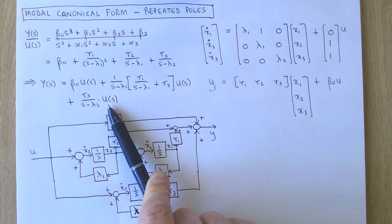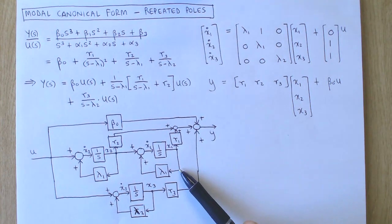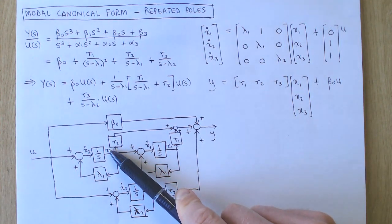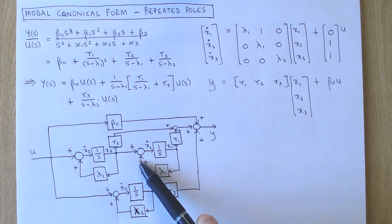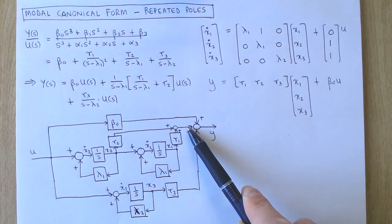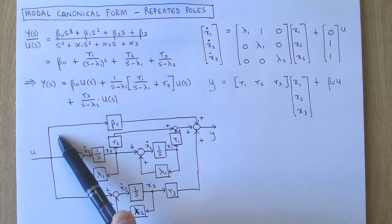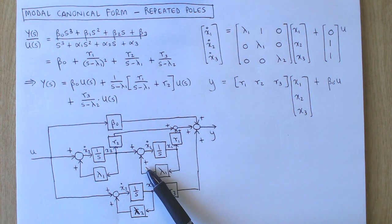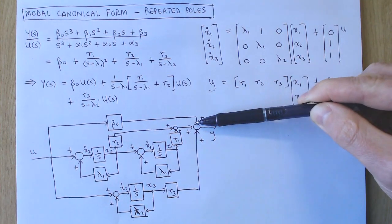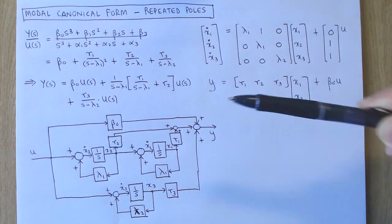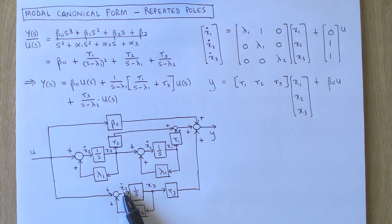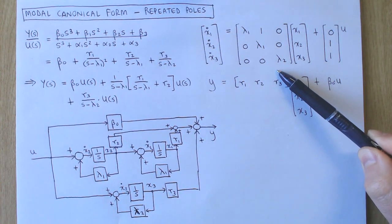This transfer function can be realized as the following block diagram, where the common factor 1 over s minus lambda 1 corresponds to this block. This is multiplied by r1 over s minus lambda 1 plus r2. Beta 0 is multiplied with input u. The last term is realized in the following block, and the outputs of all the components are summed. We now label the outputs of the integrators as x1, x2, and x3, and label the inputs as x1 dot, x2 dot, and x3 dot, then write down the state variable equations from the block diagram.